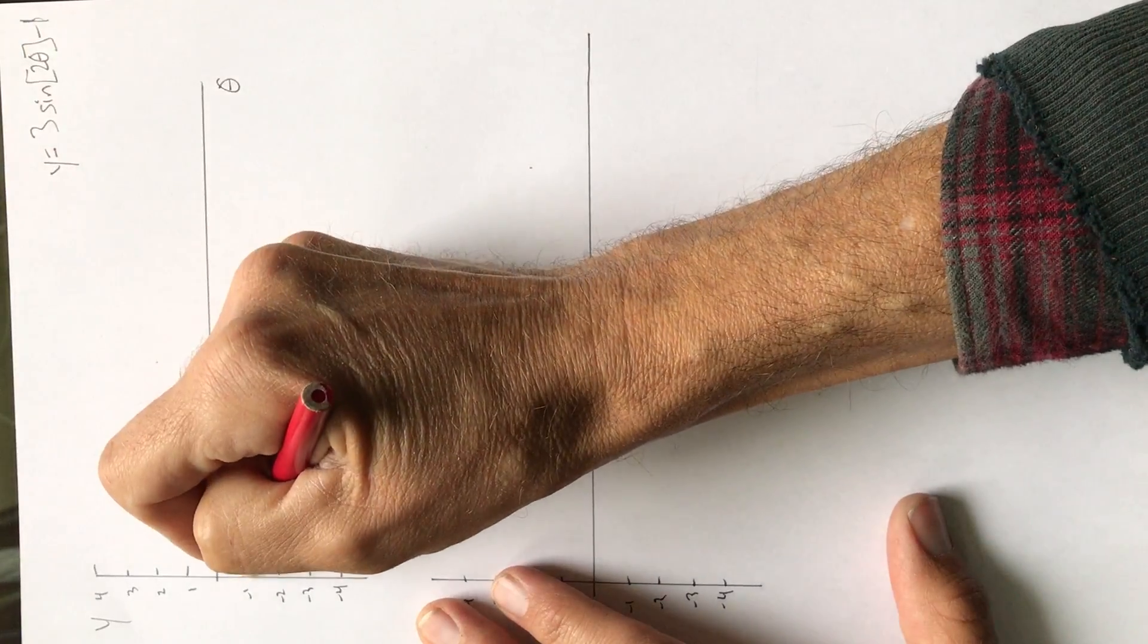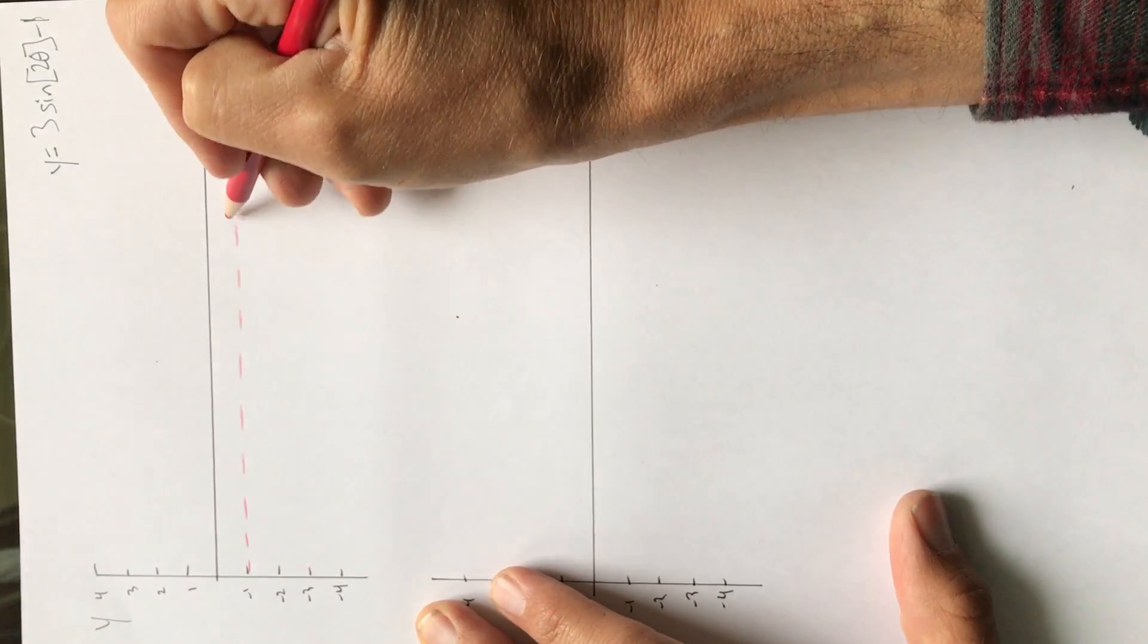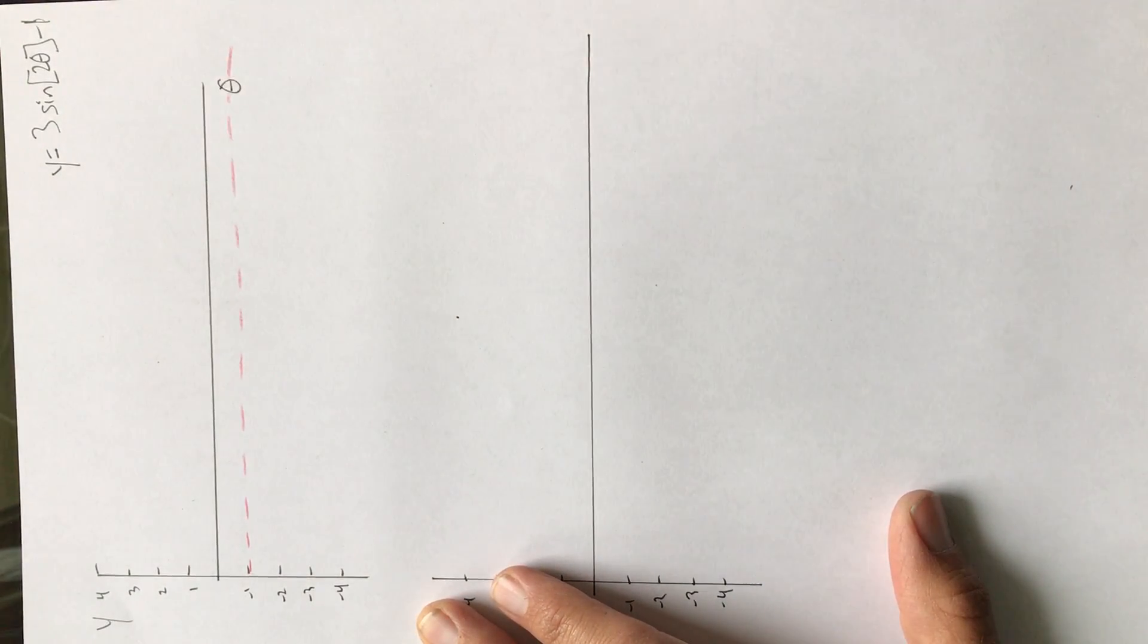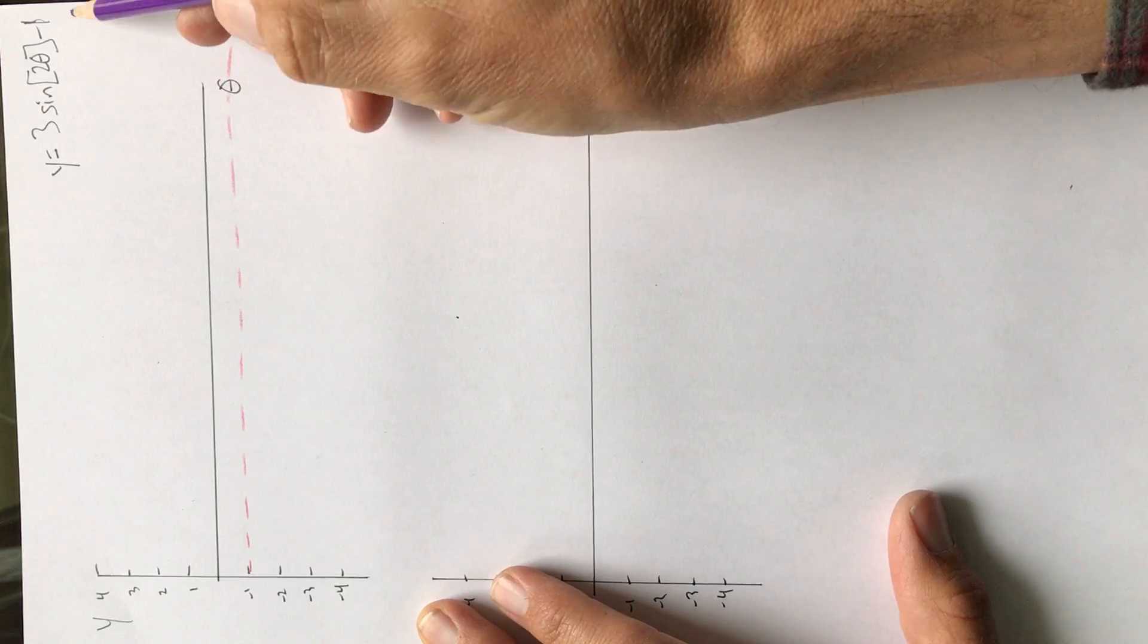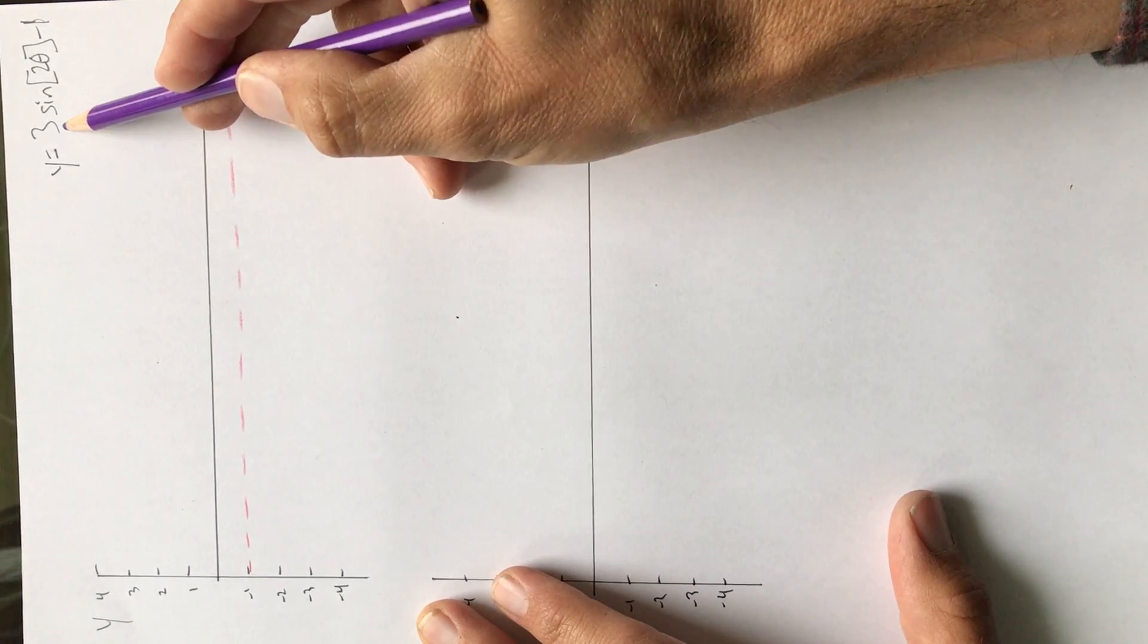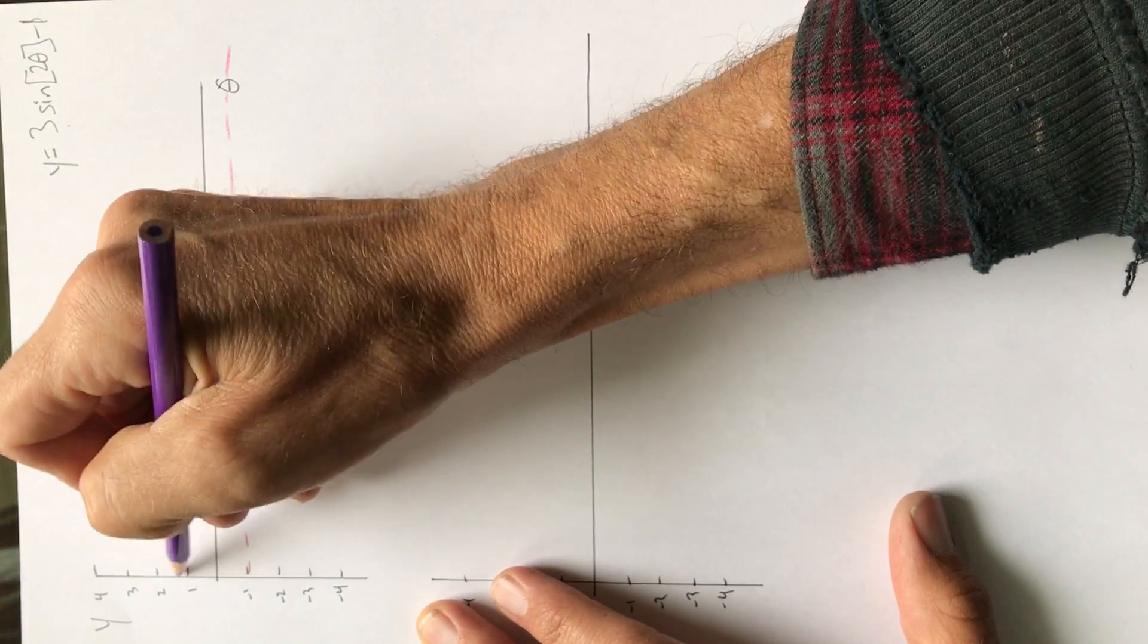So at negative one, I'm going to draw the midline. This three tells me the amplitude. So I know from this negative one, I go up three and down three. So up three, one, two, three.